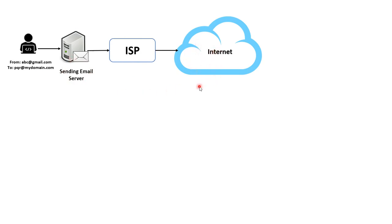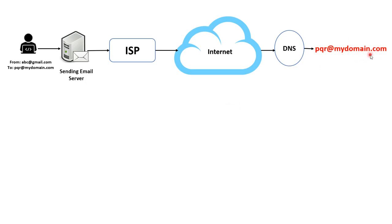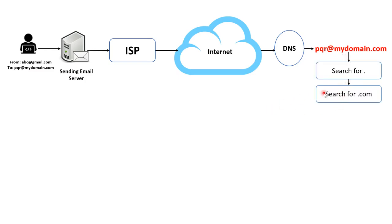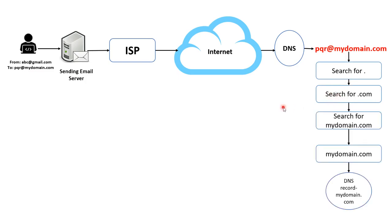The internet consists of many servers in the backend. These servers communicate using IP addresses, as they don't understand human-readable domain names. IP addresses are provided by the DNS — the Domain Name System — which translates domain names to numerical IP addresses. In this case, the DNS will search for the IP address of mydomain.com, the domain we are trying to send the email to. This IP address is provided by the A record of mydomain.com, so there must be an A record present for mydomain.com.